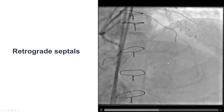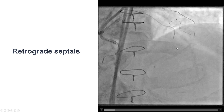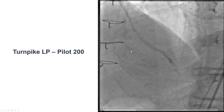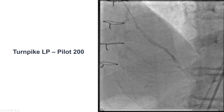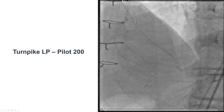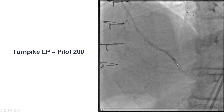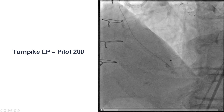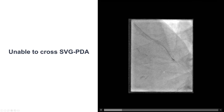We did surfing and also contrast-guided injection, but there was not a very good connection of the septals with the PDA. We then tried to go through the occluded saphenous vein graft and were actually able to advance easily using a polymer-jacketed Pilot 200 wire almost all the way to the distal vein graft, but there was an old stent placed from the vein graft across the distal anastomosis into the native vessel, and that could not be crossed.